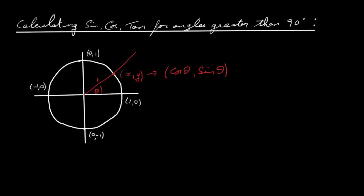So if you take angle 0 and take the sine or cos of angle 0, the cos is just going to be 1 and the sine will be 0. If you take 90 degrees, the cosine of 90 degrees will be 0 and the sine of 90 degrees will be 1. At pi or 180 degrees, the cosine will be minus 1 and the sine will be 0. Down at 270 degrees or 3 pi over 2, the cos will be 0 and the sine will be minus 1.